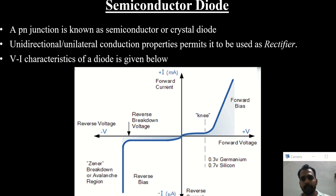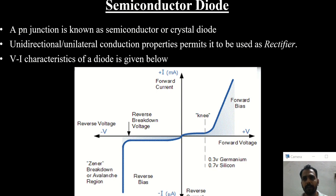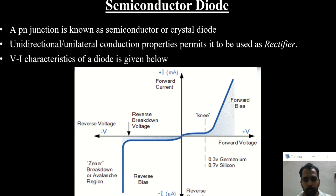The unilateral conduction property of a diode permits it to be used as a rectifier. Before discussing the rectifier, we need to learn about the VI characteristics of a diode — the voltage-current characteristics. That means the relationship between the current flowing through the diode and the applied voltage across its two terminals.